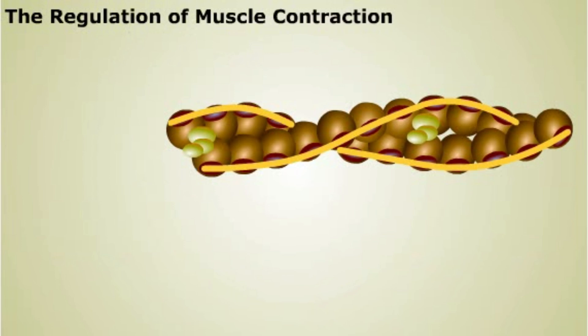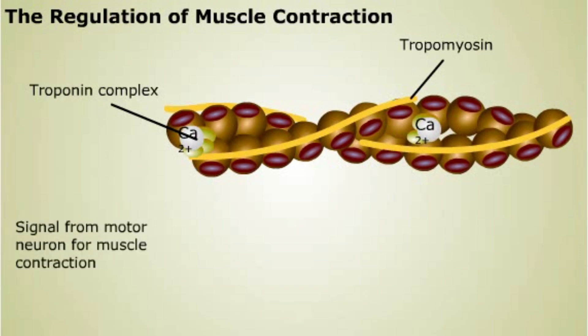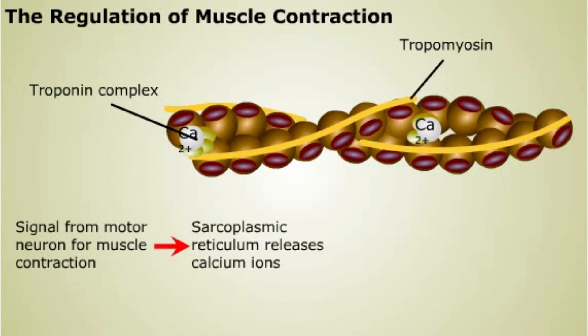Muscle contraction is regulated at several levels. The contraction of a muscle fiber is regulated by calcium ion concentration. When calcium ions are present, inhibition by tropomyosin is relieved and the muscle contracts. The presence of calcium ions is regulated by nerve impulses. A signal from a motor neuron causes the release of calcium from the sarcoplasmic reticulum.